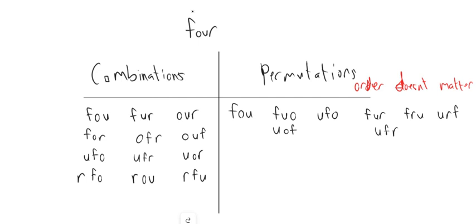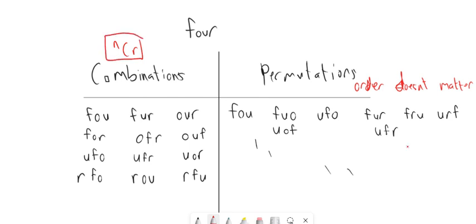That's the difference — the order of the actual letters matters. On the calculator, the button nCr works out the combinations, and then there's a new one, nPr, where P stands for permutations, so that will work out the number of permutations.